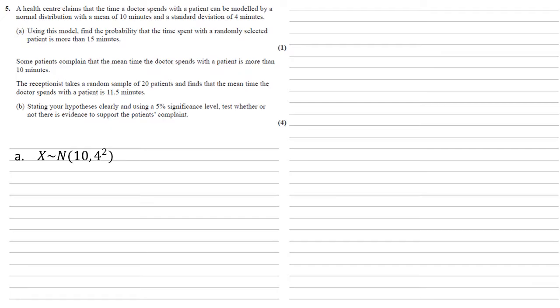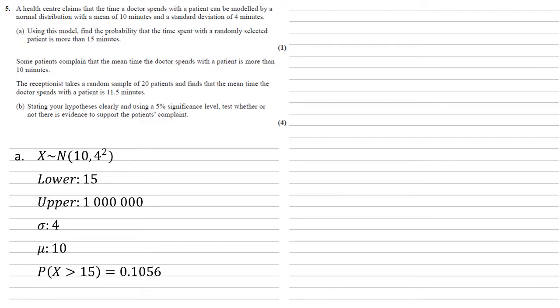To solve this we're going to put it into the calculator and use our normal distribution mode. We're looking for more than 15, so the lower limit is 15 and the upper limit is a very large number — I used a million. The standard deviation is 4 and the mean is 10. Putting those in, we get the probability that X is greater than 15 is 0.1056.